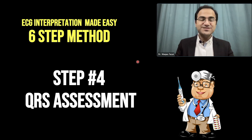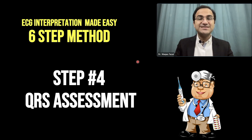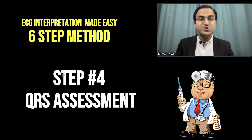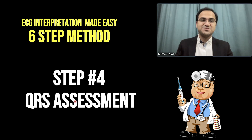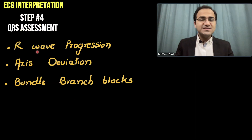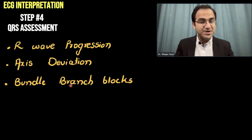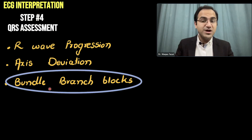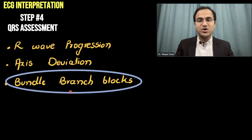In our video series of ECG interpretation made easy by the 6-step method, in this video we are going to talk about Step 4: QRS assessment. QRS assessment consists of R wave progression, axis deviation, and bundle branch blocks. In this video we are going to talk about bundle branch blocks.